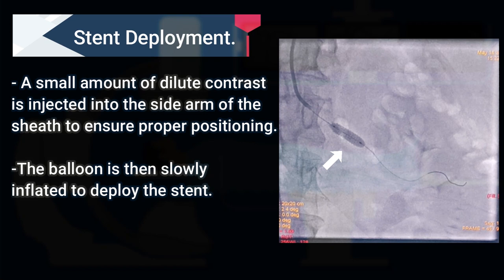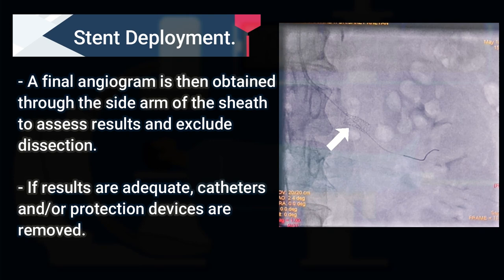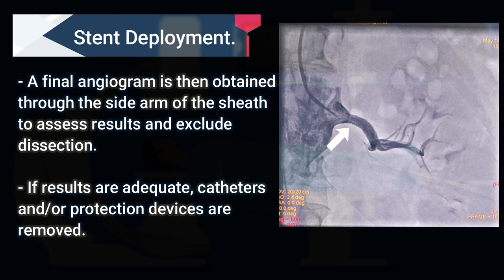Then the balloon is slowly inflated to deploy the stent into the renal artery. After deploying the stent, a final angiogram is obtained through the guiding catheter to assess the results and exclude dissection.